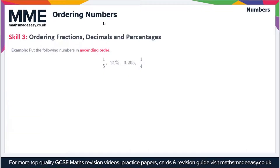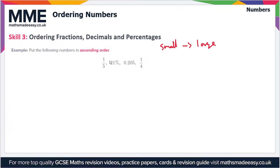Welcome to the Maths Made Easy tutorial on ordering numbers. This is the second video on this topic. The first skill we're going to look at is ordering fractions, decimals and percentages. In this example we have to put the following numbers in ascending order — that's smallest to largest. We have one fifth, 21%, 0.205, and one quarter. The first thing we need to do is convert these to the same form, so it's easiest to convert them all to decimals.